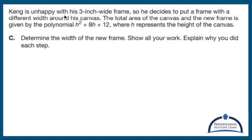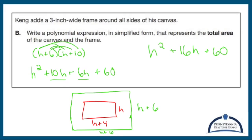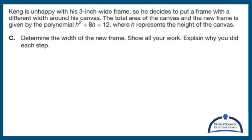Last but not least, Kang is unhappy with his 3-inch wide frame, so he decides to put a frame with a different width around his canvas. The total area of the canvas and the new frame is now given by a brand new polynomial. So let's take a look at the old one. It was h and h plus 4. Now I have a simplified form of h squared plus 8h plus 12. H represents the height of the canvas.